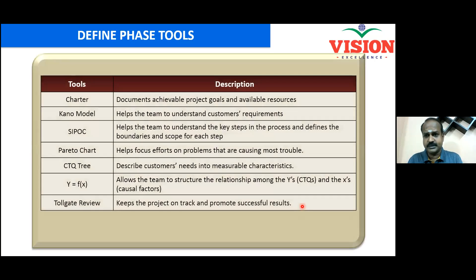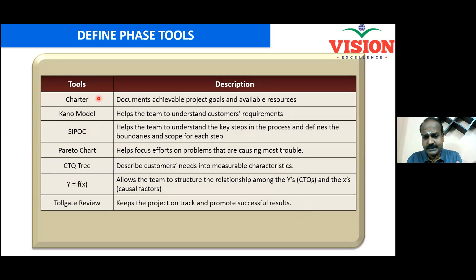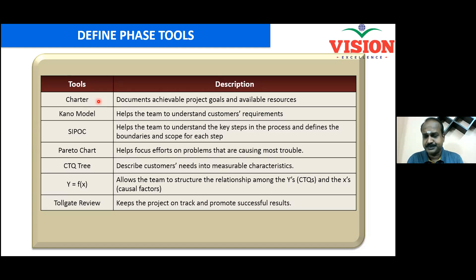There are several tools you can use to get these questions answered effectively. The first one is the project charter — nothing but an executive summary of your project. A one-page document that clearly talks about the problem, business case, scope, goal, team members and key milestones. Any top management reading your project charter quickly can approve your project. Add visuals to make it impressive — one or two pages maximum.